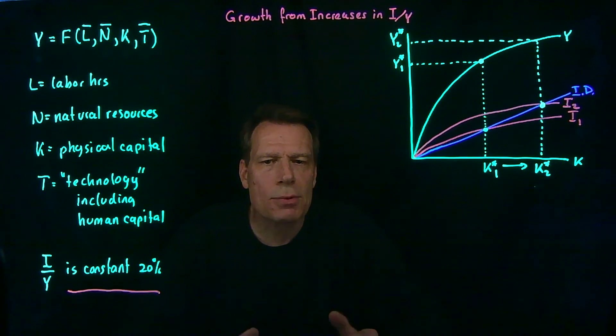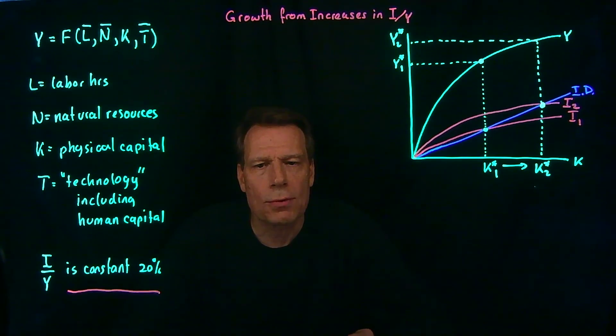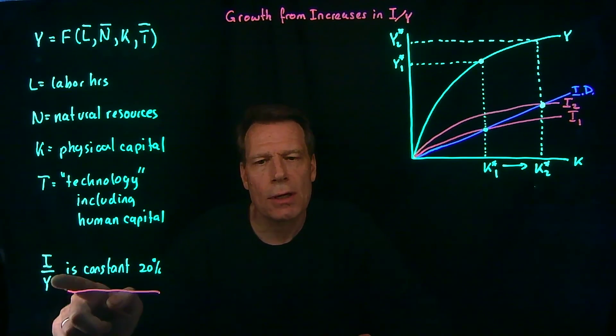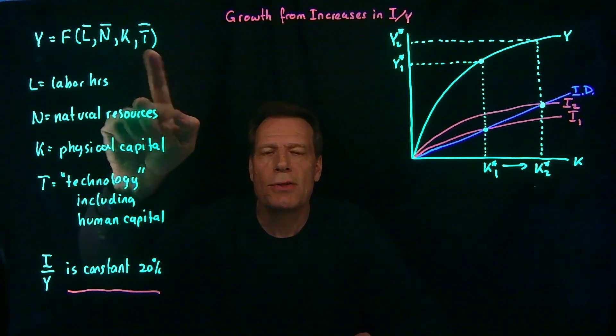So while we can find some sources for economic growth in changing labor hours through increased fertility or immigration or changing the natural resources by just finding more natural resources, there are natural limits to those sources for economic growth just as there's a natural limit to finding economic growth solely in increasing the investment share of GDP. So ultimately where we're going to look for a long run and continuing source of economic growth is in changes in technology.